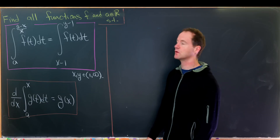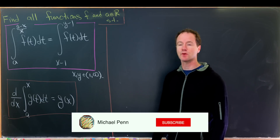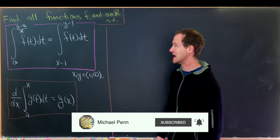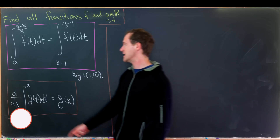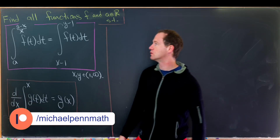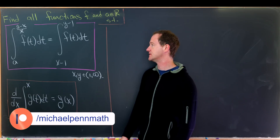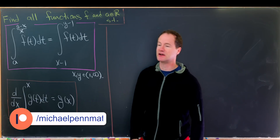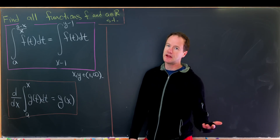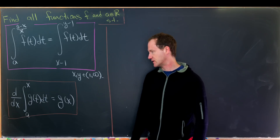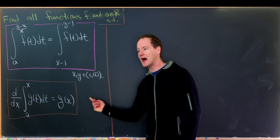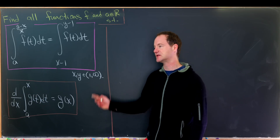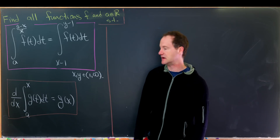We've got a pretty interesting integral equation to show everyone today. Our goal is to find all functions f and numbers a satisfying the equation: the integral from a to (y minus x)/x of f(t) dt equals the integral from x minus 1 to y minus 1 of f(t) dt, where x and y are from the interval one to infinity — although this restriction may be a little stricter than it needs to be.